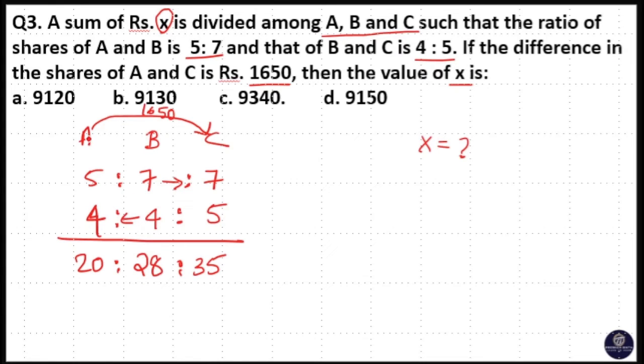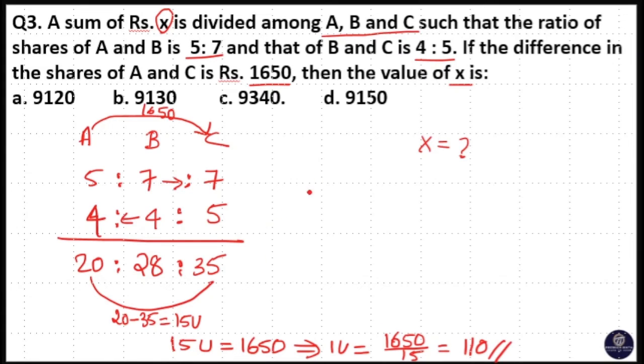We are saying the difference in shares of A and C is 1650. Here, the difference between A and C value is 20 minus 35, that is 15 units. So, that means 15 units is equal to 1650. That means 1 unit is equal to 1650 divided by 15, which is 110.